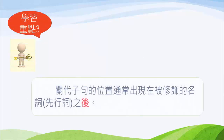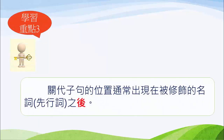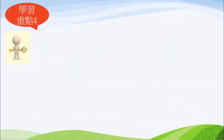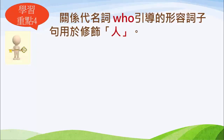再來，關代子句既然要修飾先行詞，它要放在哪？關代子句的位置，通常都出現在先行詞的後面。那關系代名詞 who 引導的子句，修飾人。